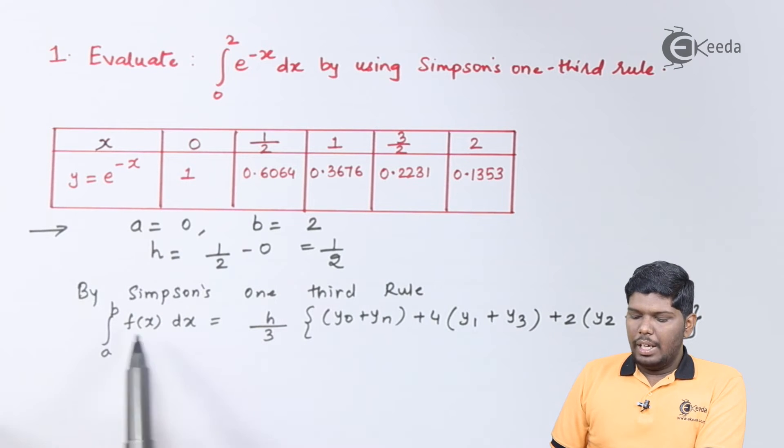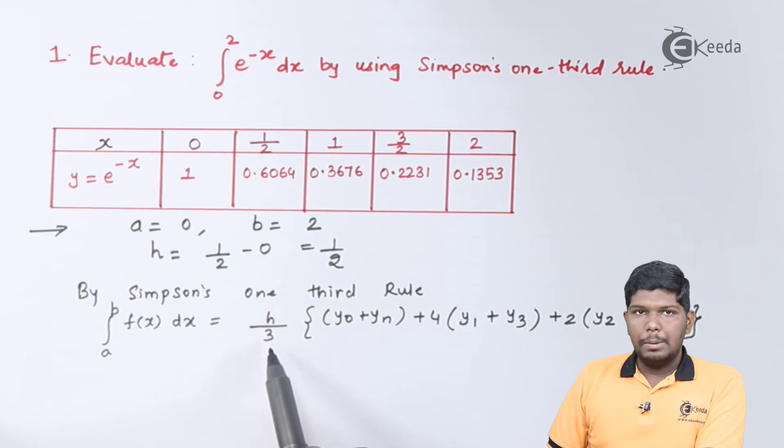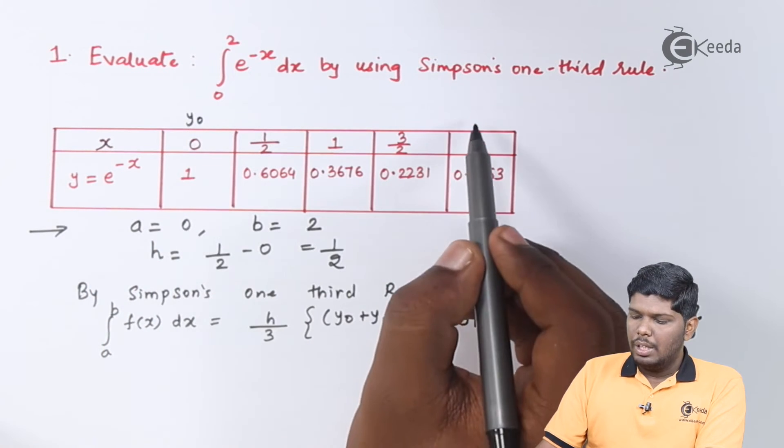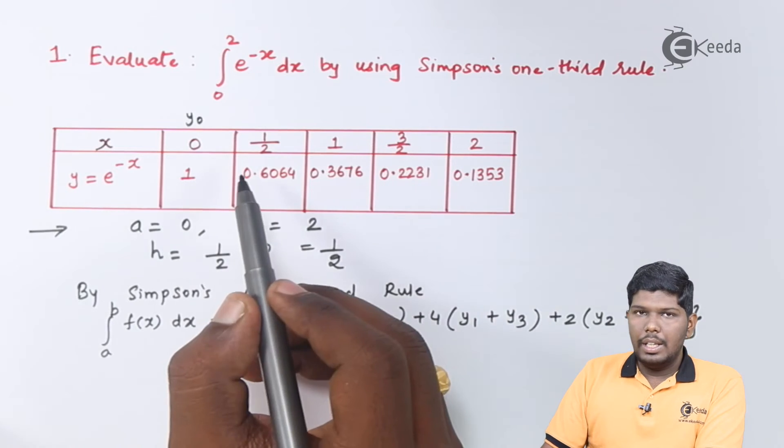By Simpson's one-third rule, we have integral a to b f(x) dx equals h/3 times, in bracket, y₀ plus yₙ. Now what is y₀ and yₙ? The first term is called y₀, which will be 1. The last term will be yₙ. Here in this case we have y₁, y₂, y₃, and y₄.